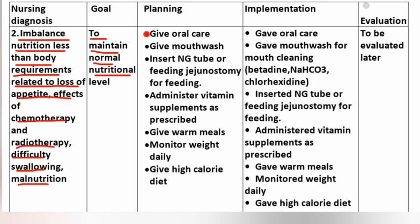Planning: give oral care, give mouthwash or clean the mouth. Insert NG tube or feed via gastrostomy. Administer vitamin supplements as prescribed. Give warm meals. Monitor weight daily. Give high calorie diet.